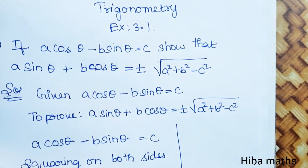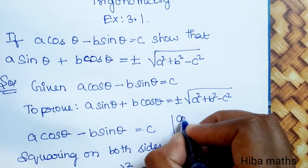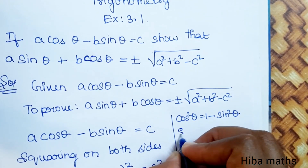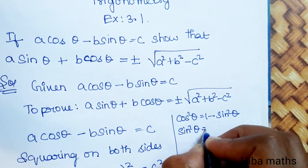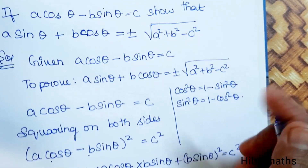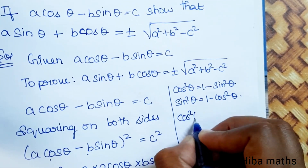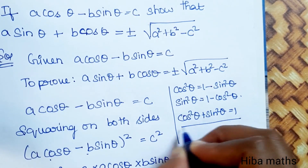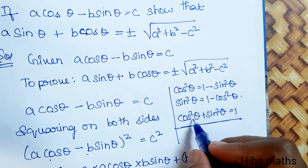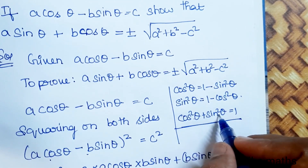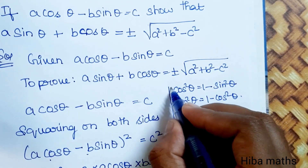You do classwork: write down this line. cos squared theta equals 1 minus sin squared theta, and sin squared theta equals 1 minus cos squared theta. The important identity is cos squared theta plus sin squared theta equals 1. Using this, we substitute and simplify.